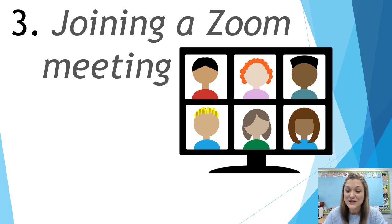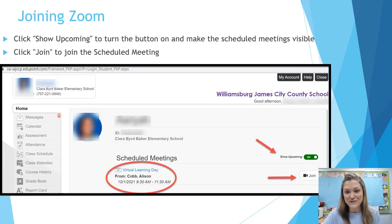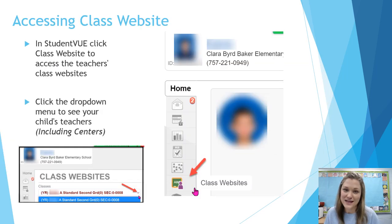Last, we will show you how to join a Zoom meeting. Zoom meetings are live meetings where students can see their teacher and talk to their classmates. On virtual learning days, students will have a Zoom class meeting and a Zoom lesson with their teacher. From the Student View home screen, click Show Upcoming to turn the button on and make sure the scheduled meetings are visible. Click Join to join the scheduled meeting. Teachers may refer students to the class website for some of their independent work activities or center lessons — click Class Website.